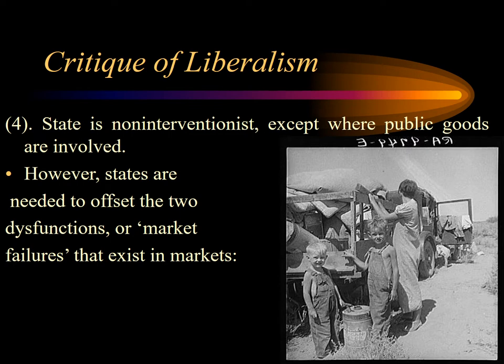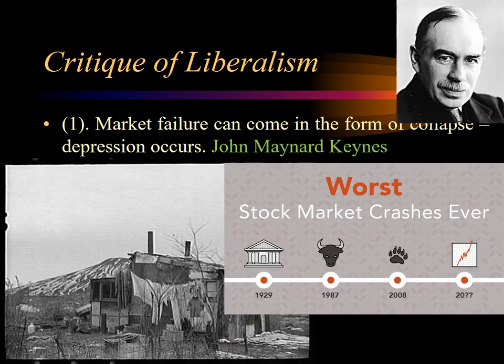States are needed to offset the two dysfunctions or market failures that persist in markets. The first market failure can come in the form of a collapse, a depression. Business cycles are completely normal — you have periods in which the economy is doing well, when the sellers and buyers are well-matched. Then you get either too much competition, which undermines investment, or other dysfunctions where buyers and sellers are not well-aligned, and then the economy begins to slow down before eventually picking up again. This is a constant cycle.